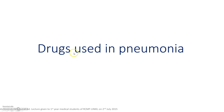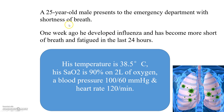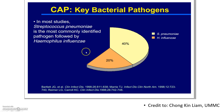Today we're going to talk about the drugs used in pneumonia — basically antibiotics. For example, a 25-year-old male presents to the emergency department with shortness of breath. One week ago he developed influenza and has become more short of breath and fatigued in the last 24 hours. His temperature is 38.5°C, oxygen saturation is 90% on two liters of oxygen, blood pressure is 100/60 mmHg, and heart rate is 120 per minute. This is one way a patient with pneumonia can present.